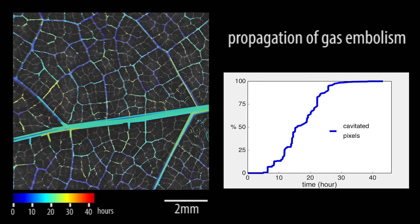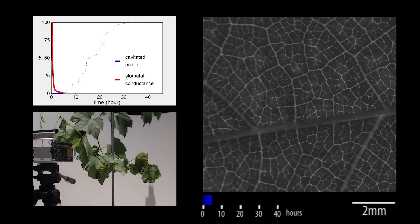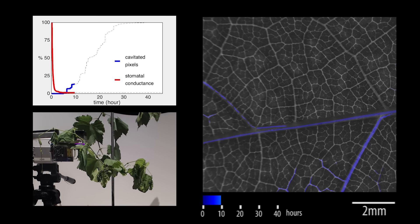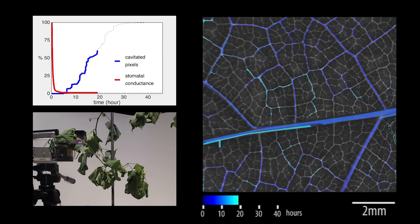Let's compare the time scale of these responses. Shortly after the shoot was disconnected from its roots, stomatal conductance was quickly reduced, followed by the wilting of the leaves. It took several hours before any sign of embolism appeared.